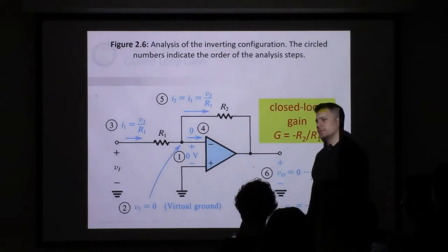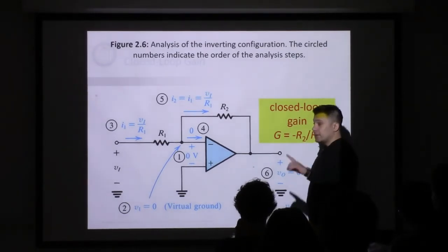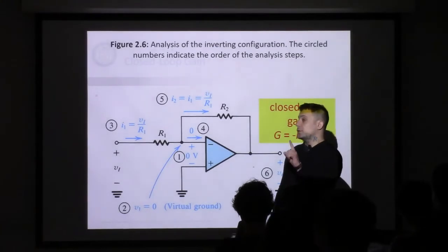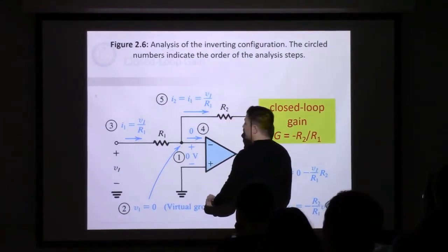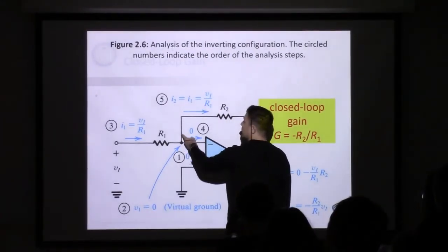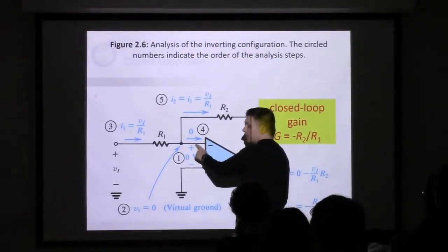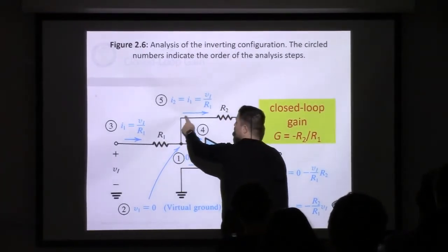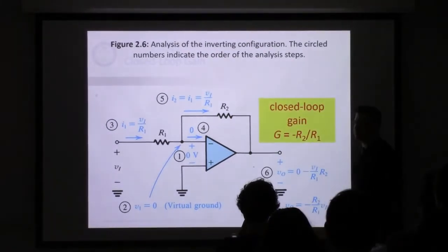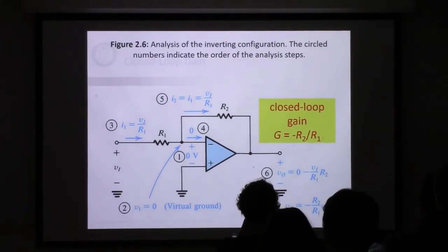The last step is to use KVL, and VO equals zero minus the voltage drop across R2, which is I2 times R2, substituted in with VI over R1, giving us our output. A student asks how I2 equals I1 with different resistors. The resistance doesn't come into play because we're using KCL — the current into the op-amp is zero (infinite impedance, open circuit), so KCL tells us the currents must be equal. That gives us our closed-loop gain for the inverting op-amp.